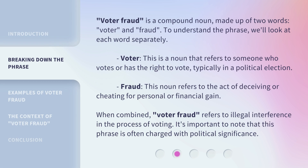Voter fraud is a compound noun made up of two words: voter and fraud. To understand the phrase, we'll look at each word separately. Voter: a noun that refers to someone who votes or has the right to vote, typically in a political election. Fraud: a noun that refers to the act of deceiving or cheating for personal or financial gain. When combined, voter fraud refers to illegal interference in the process of voting. It's important to note that this phrase is often charged with political significance.